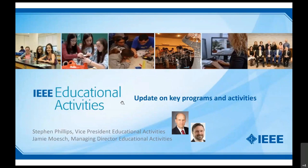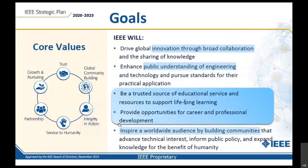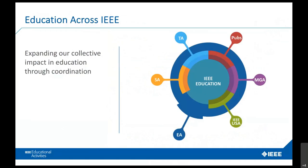This is Steve Phillips. Looking at IEEE's goals for the next five years, the big box in blue has a lot to do with education — educational service and resources to support lifelong learning, and providing opportunities for career and professional development. Some of the others have educational content as well, but those are the big ones. EA plays a big part in that role, but we do not act in a vacuum. Education is all over IEEE, and Educational Activities is a leader in this, working closely with all operational units of IEEE to provide education to our members.